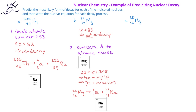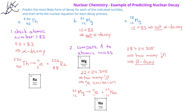In the third example, we have magnesium-28. Again, we would not predict alpha decay since the atomic number is too small. The mass number 28 is well above the atomic weight of magnesium, which is 24.3. This indicates that magnesium-28 has too many neutrons, so we would predict that magnesium-28 undergoes beta decay to turn a neutron into a proton. The equation for this would be: magnesium-28 decays to form a beta particle and aluminum-28.